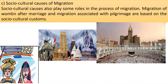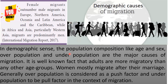Socio-cultural causes also play some roles in the process of migration. Migration of women after marriage, and migration associated with pilgrimage — a travel made by a person for a religious purpose or based on socio-cultural customs — are examples. Female migrants outnumber male migrants in Europe, Northern America, Oceania, and Latin America and the Caribbean, while in Africa and Asia, particularly Western Asia, the migrants are predominantly men.